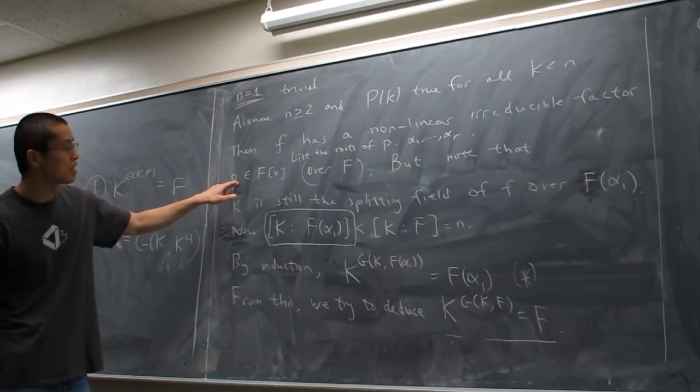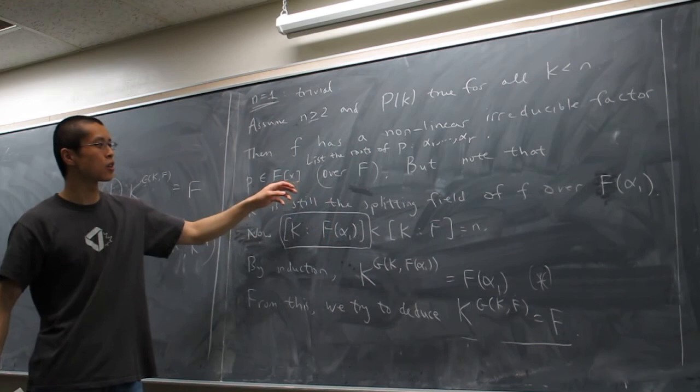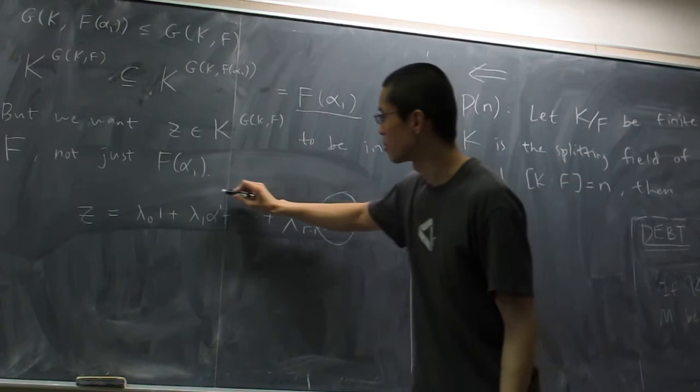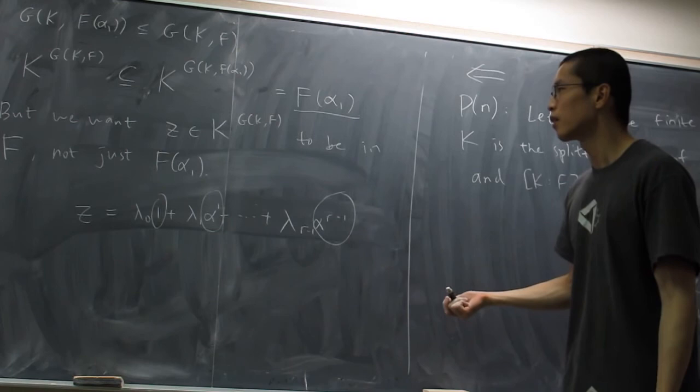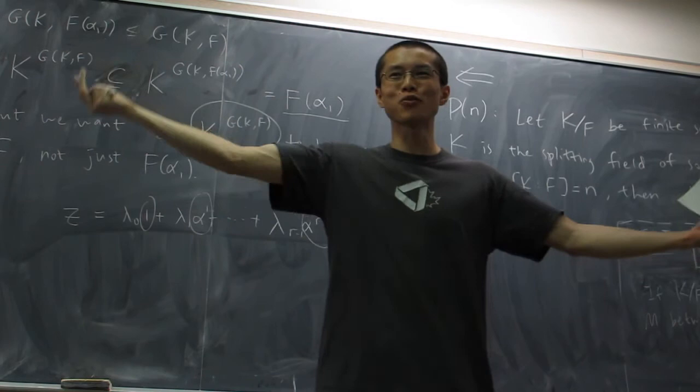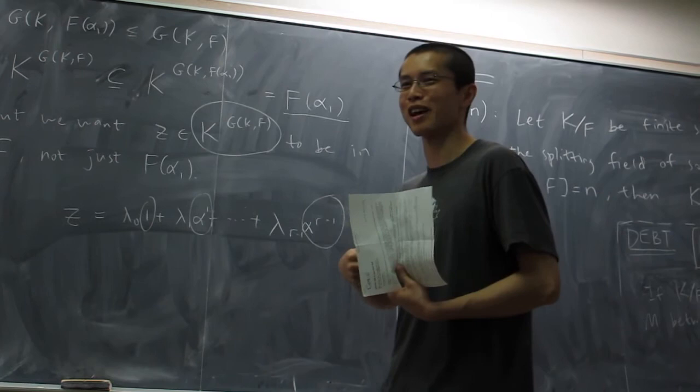By construction, P is the minimal polynomial of α₁ because P is irreducible and has α₁ as a root. So the degree r equals the degree of this extension [F(α₁):F]. We know F(α₁) has dimension r over F, with basis elements {1, α₁, …, α₁^(r-1)}. Since z passes the symmetry test — I've applied all of my symmetries to z and found it doesn't change — and z is in F(α₁), I can write z = λ₀ + λ₁α₁ + … + λ_(r-1)α₁^(r-1).